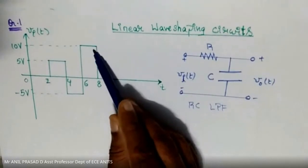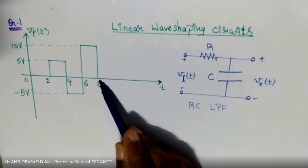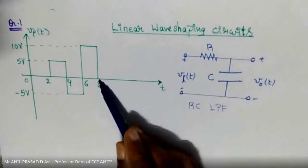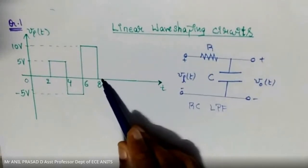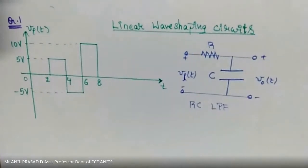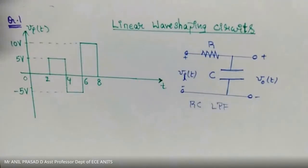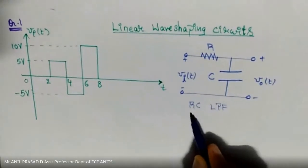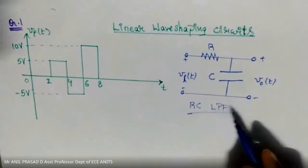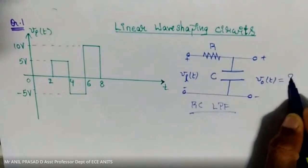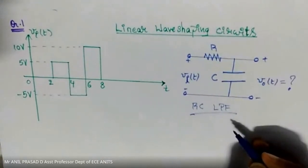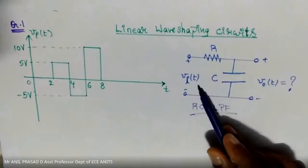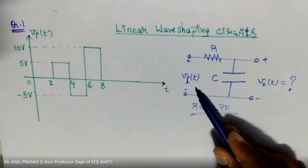Exactly at t=8 seconds, the input changes from ten volts to zero volts, and after t=8 seconds the input continues to be zero volts. This is how the input is varying. When this type of input signal is applied to the RC low pass filter circuit, you are asked to find what is the output waveform corresponding to this input.